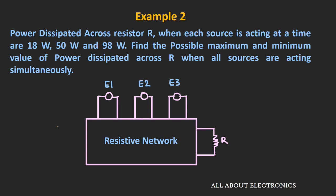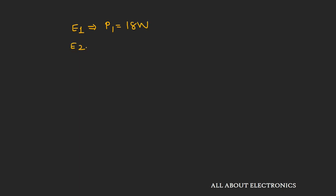In the second example, we have a resistive network with three independent voltage sources connected. We are given that when each independent source acts alone, the power dissipated across resistor R is: P1 = 18W (source E1 alone), P2 = 50W (source E2 alone), and P3 = 98W (source E3 alone). We need to find the possible maximum and minimum power dissipated across resistor R when all three sources act simultaneously.